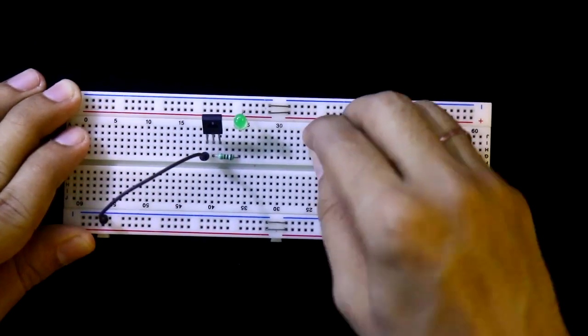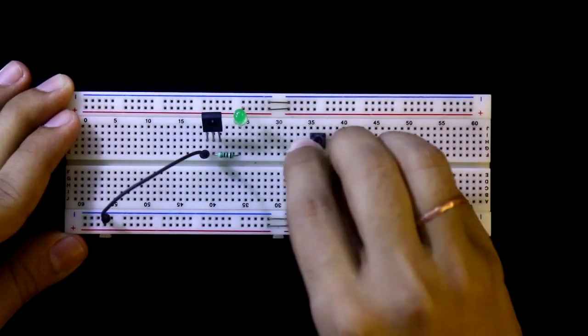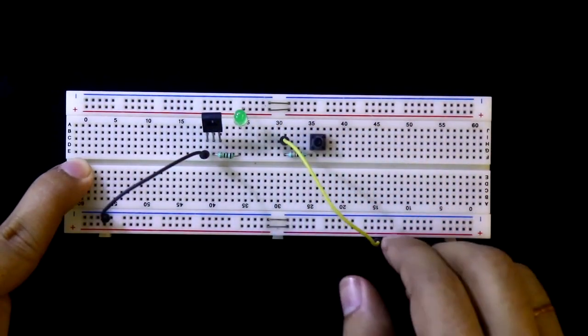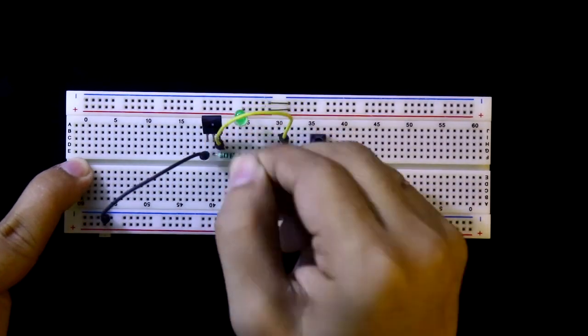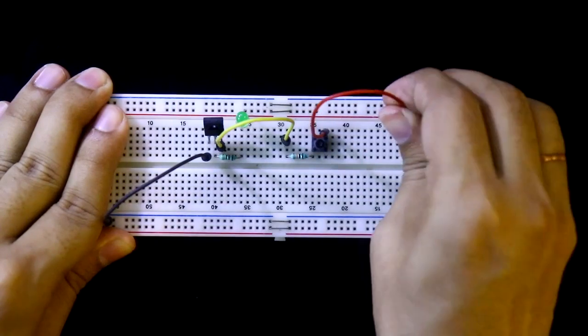Put the push button switch. With the switch a 10K ohms resistor is connected, and other side of the resistor is connected to the base of the transistor. Switch is connected to the plus VCC.